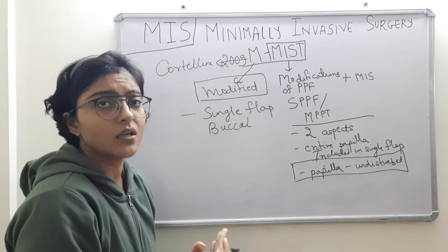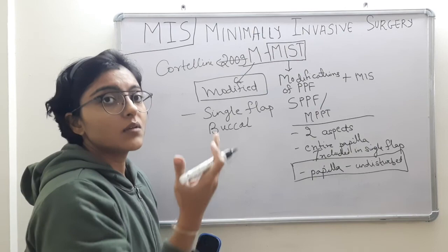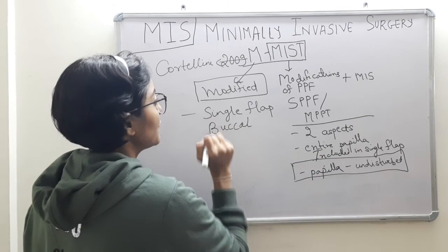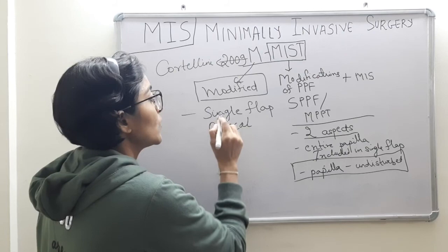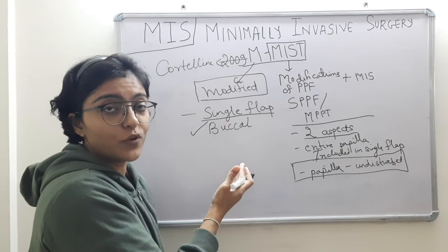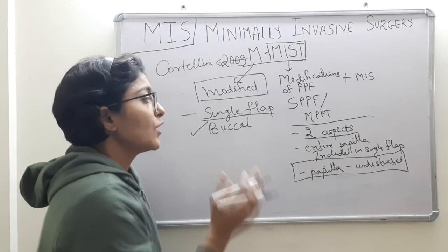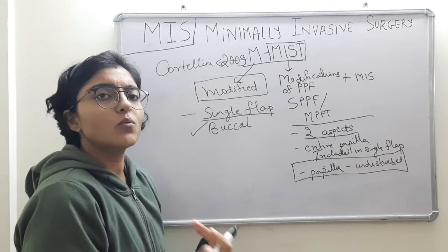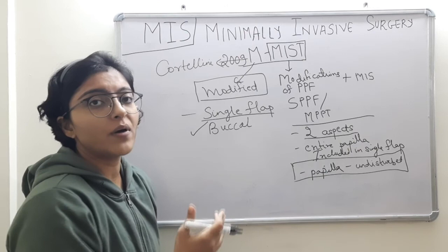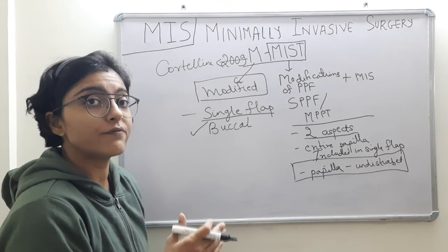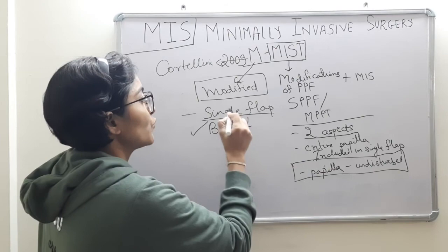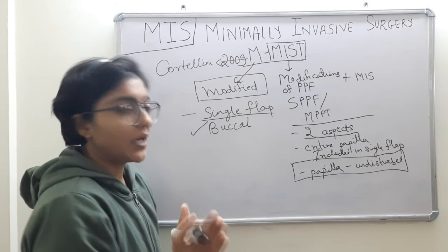The buccal or labial aspect is easier to access and approach, while the palatal or lingual aspect is comparatively difficult. In MIST, both aspects of the flaps were incised and reflected; here, only a single flap — buccal — is reflected. The indication for this technique will be an isolated intrabony deep defect with buccal extension or located buccally. If the defect is located palatally or lingually, MIST should be performed instead, where both sides of the flap are reflected.